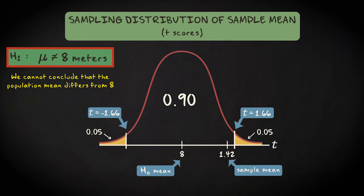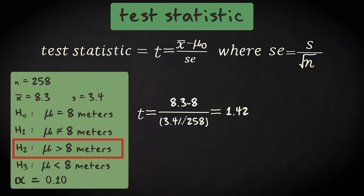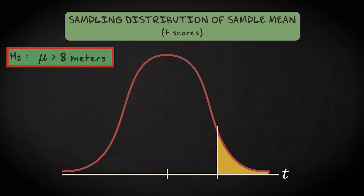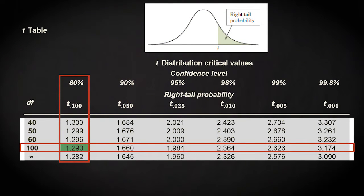The second alternative hypothesis is that the population mean is larger than 8. The sampling distribution looks the same, but now we do a one instead of a two-tailed test. That looks like this. We still have an alpha of 0.10, so these are the cumulative probabilities. We look up the critical value in the t-table. That's 1.29.